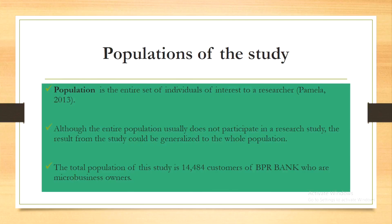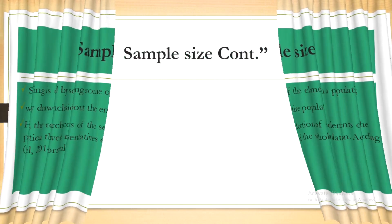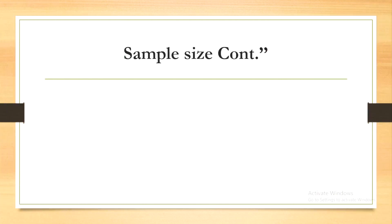Due to restrictions of time and resources, you can't assess all those people — that's why we come up with a sample size. According to Gabel, who formulated a formula for determining the sample size, our population is 14,484 but our sample size is 99. That's why we come up with sampling techniques to get those 99 from the huge population.